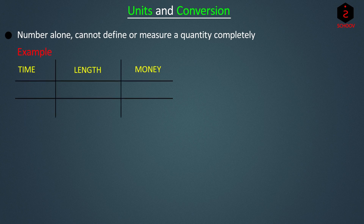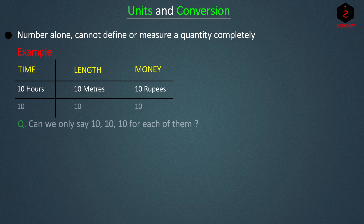We say 10 hours for time, 10 meters for length and 10 rupees for money. Can we only say 10, 10, 10 for each of them? No, because in that case we would not know which 10 is time, which is length and which is money.